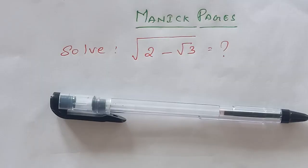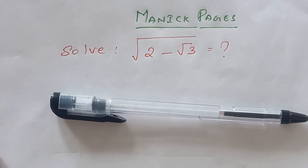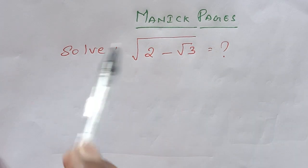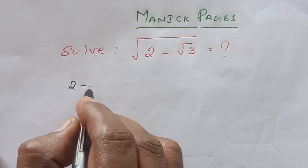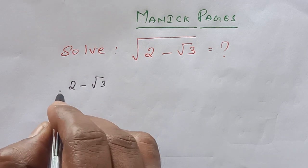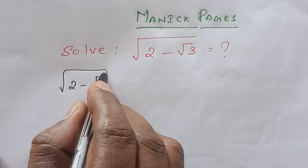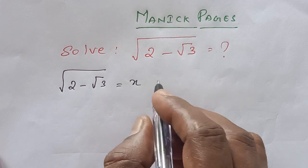Hello, welcome to Morning Pages. In today's page, we solve the square root of 2 minus square root of 3. So the square root of 2 minus square root of 3 is equal to x — I take it as x.